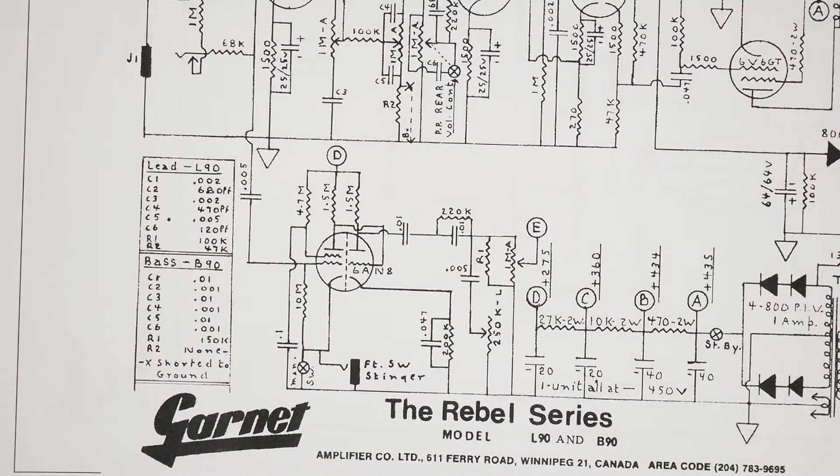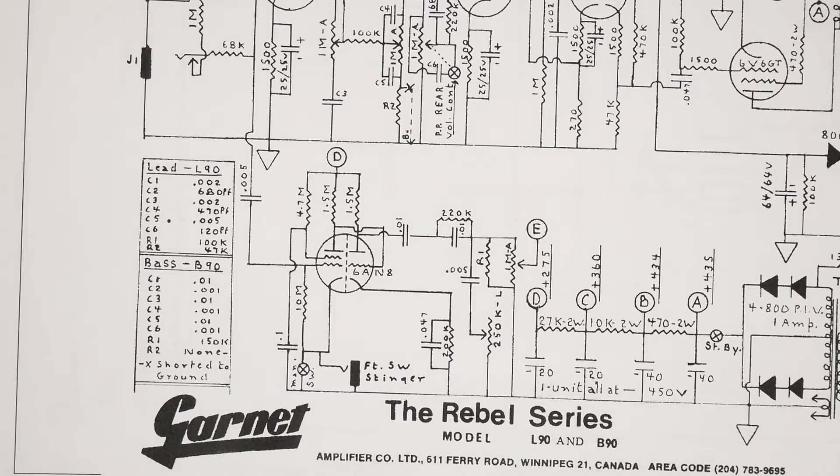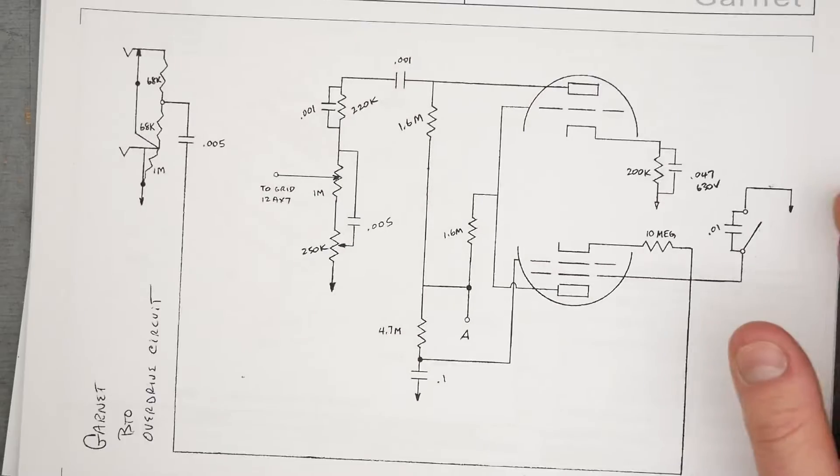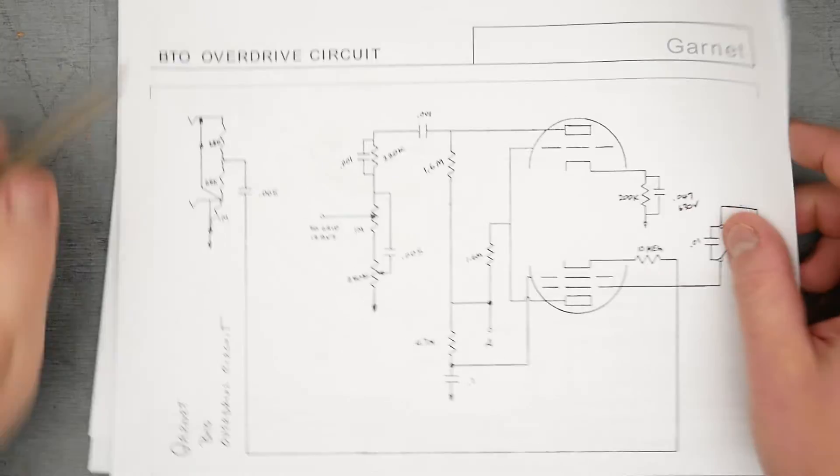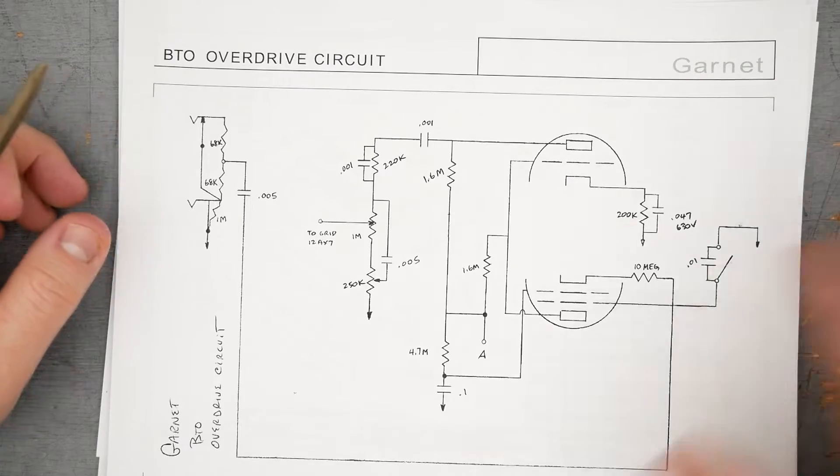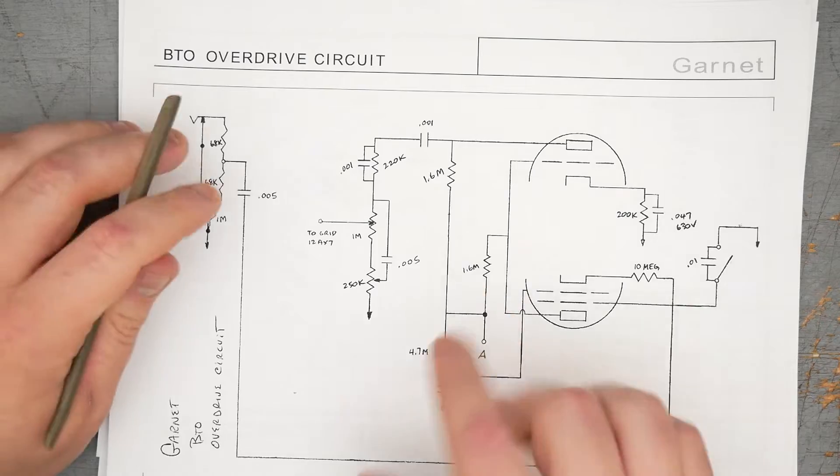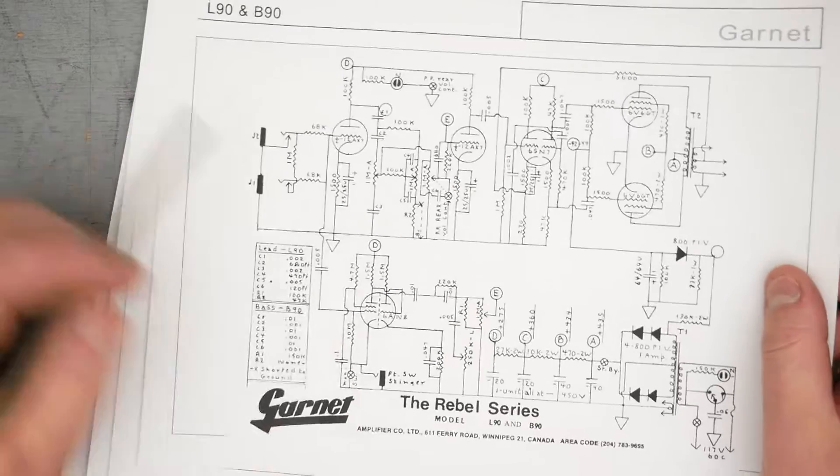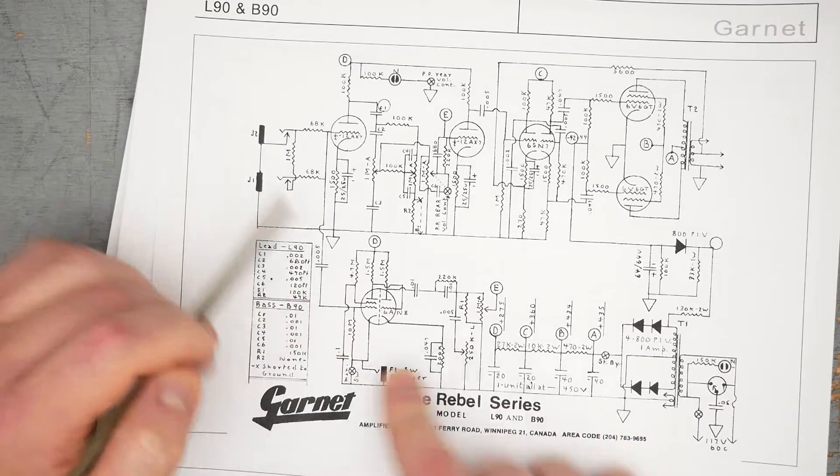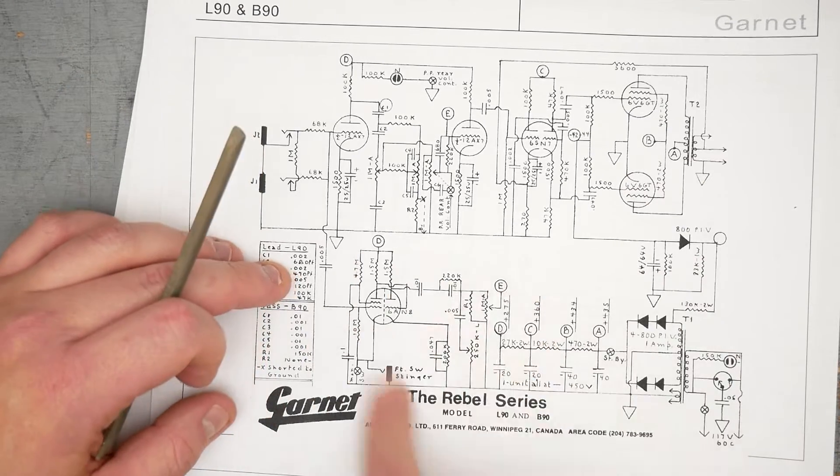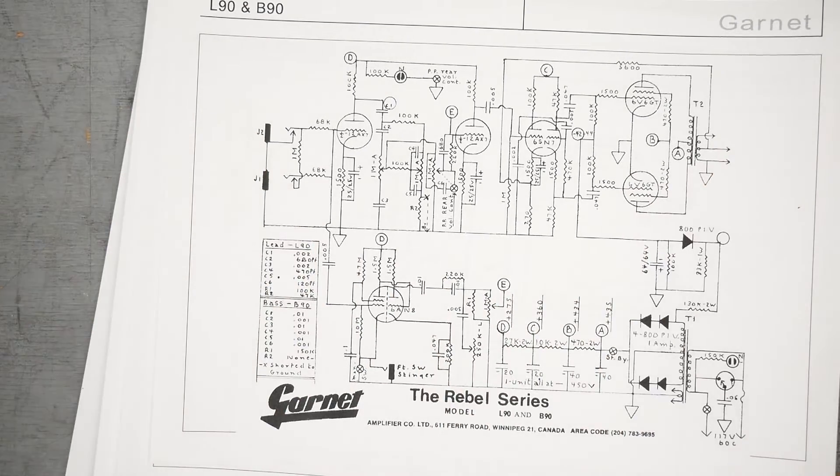This is the L90 from the Rebel series. I also want to mention here, in the schematics on el34 world, you'll come across this circuit labeled the BTO overdrive circuit. There's some issues with this schematic here that I want to talk about. I think there are multiple errors here. We'll be basing the design off this schematic here from the Rebel series.